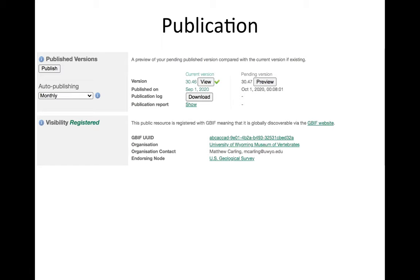All 30 versions prior to the current one as of September 1st are archived in the IPT just in case they're necessary. You can see that the pending version should be October 1st at 8 o'clock in the morning. The registered piece is that GBIF gives a UUID to the dataset so it can be found easily — a UUID with some basic information about it. That's how it looks in the IPT.